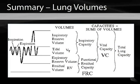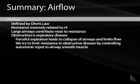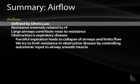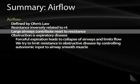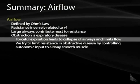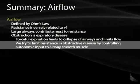Reviewing a couple topics before we break: lung volumes — tidal volume and residual volume are most important. Lung capacities — functional residual capacity, vital capacity, and total lung capacity are most important. Airflow is defined by Ohm's law; the most important contributor to resistance is the radius, as we know from Poiseuille's law. The large and medium-sized airways contribute most to airway resistance. Remember that obstruction is an expiratory disease — forced expiration leads to more dynamic airway collapse. We try to limit airway resistance by controlling autonomic input to airway smooth muscles, giving beta-2 agonists to bronchodilate.